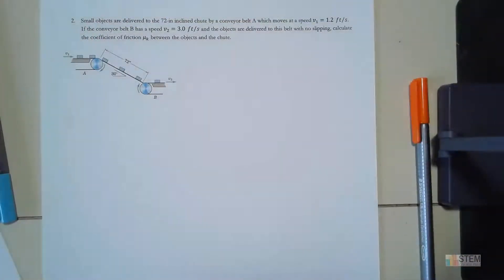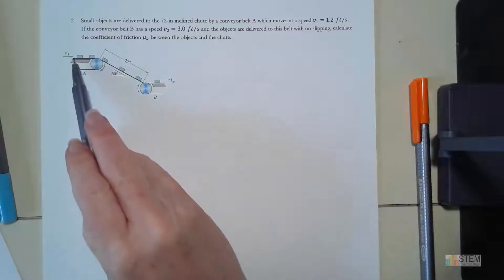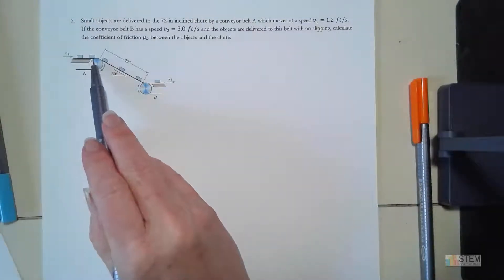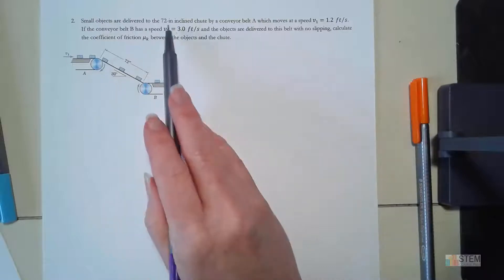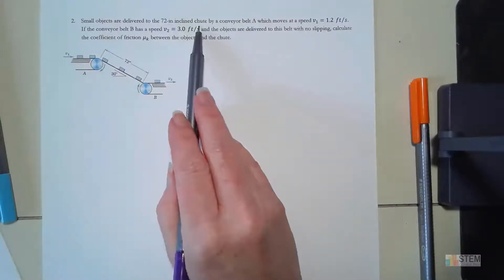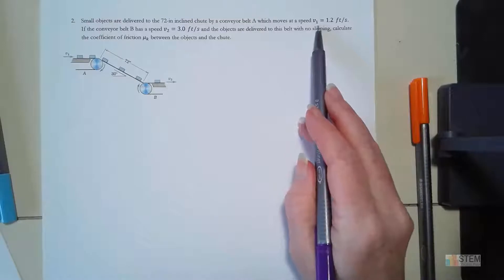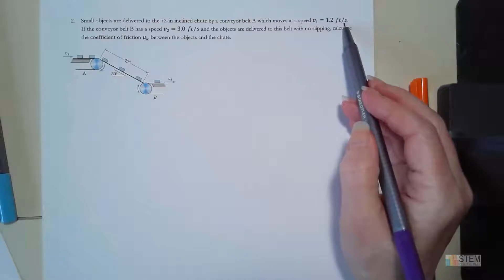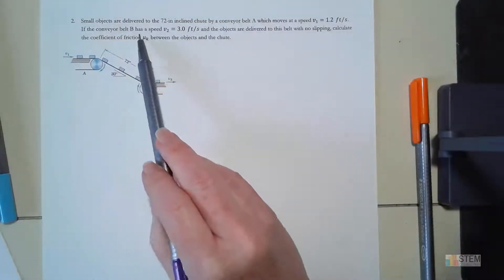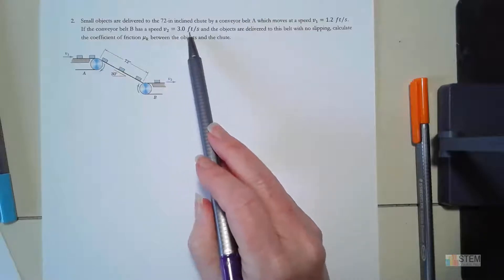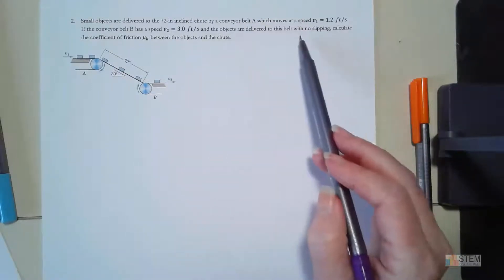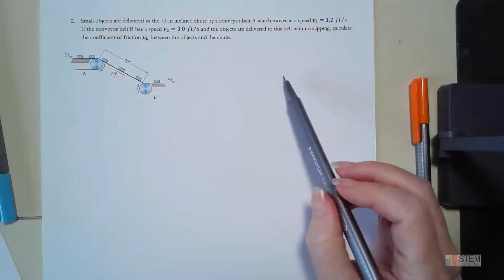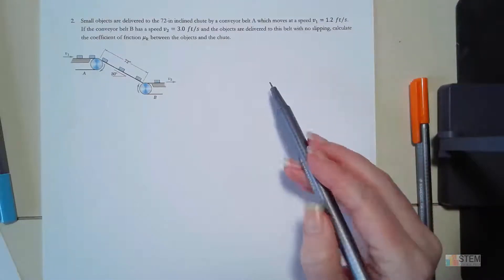So this is our conveyor belt problem, a simple kinetics problem where we also had to use kinematics. Here we have a conveyor belt with objects being delivered to a 72-inch inclined chute. It's going to move at a speed of V1 equals 1.2 feet per second. If the conveyor belt B, which is down here, has a speed of 3 feet per second and the objects are delivered to this belt with no slipping, then we want to calculate the coefficient of friction between the objects and the chute.